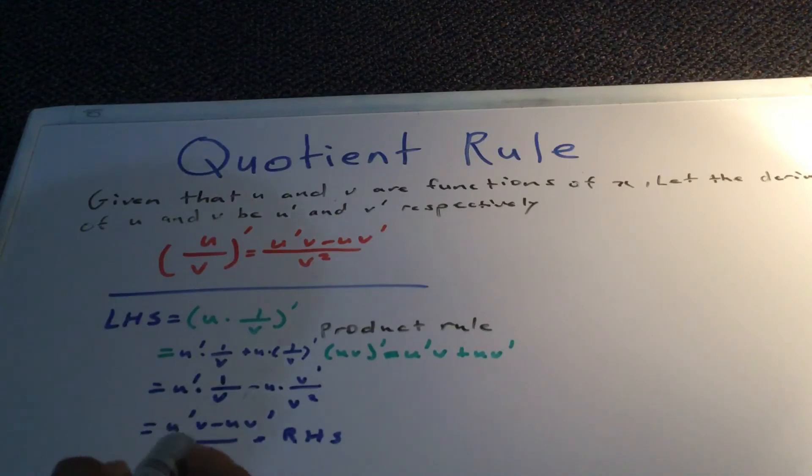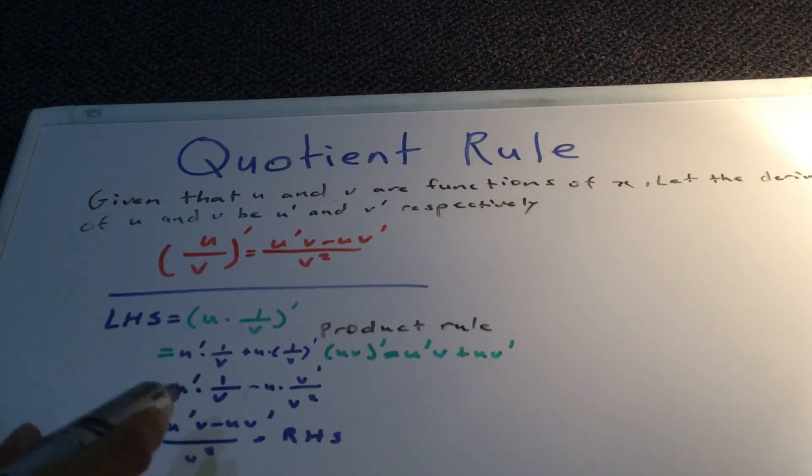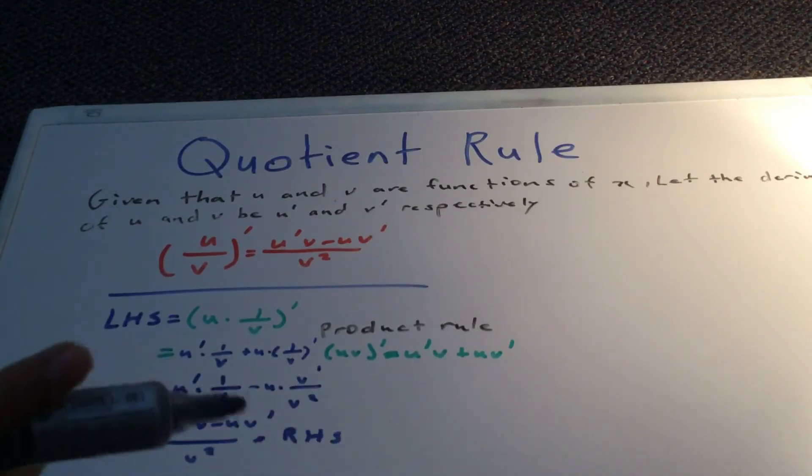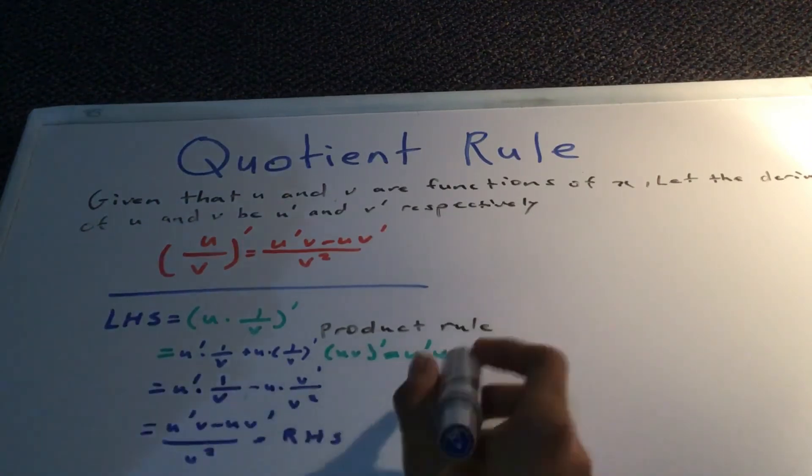Basically, I just did u prime times 1 over v, which gives you u prime over v, minus - and then same thing - u times v prime, you get u v prime, and then over v squared.